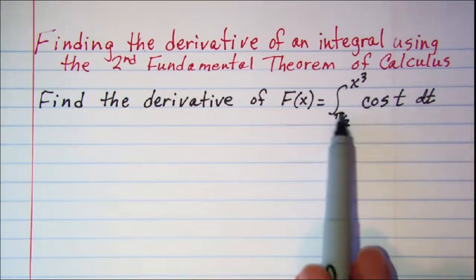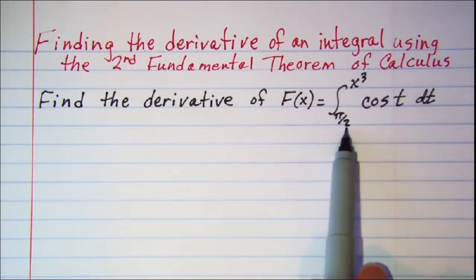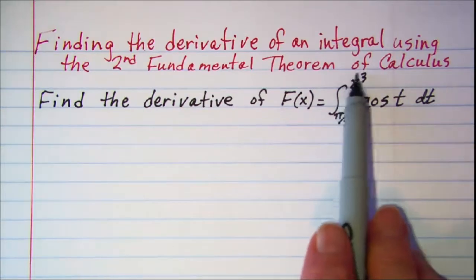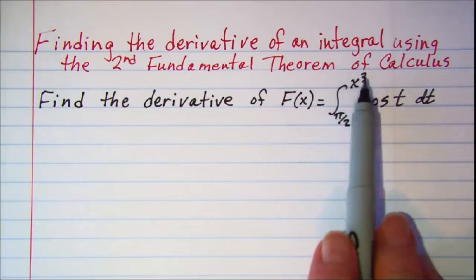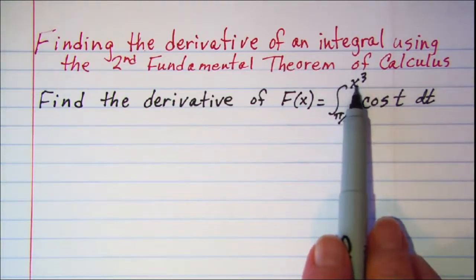The lower limit of integration needs to be a constant and pi over 2 is a constant. But we have a problem in the upper limit of integration because we need a variable up there.